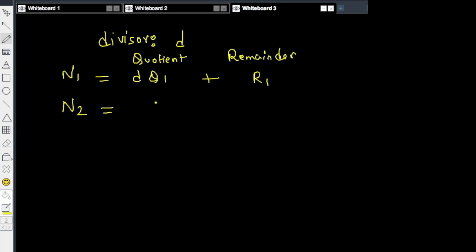Similarly, suppose if I divide n2 by D, the quotient is q2 and the remainder is r2. So n2 can be written as D times q2 plus r2.